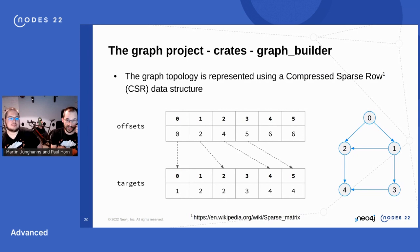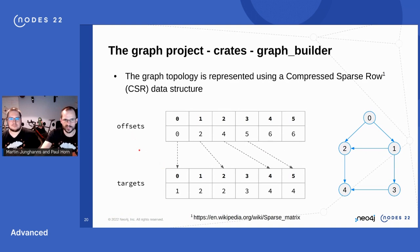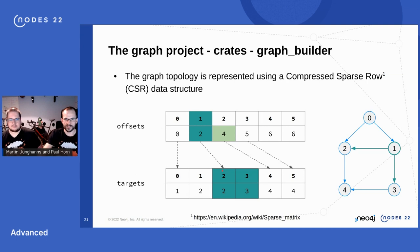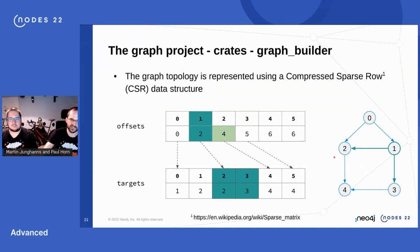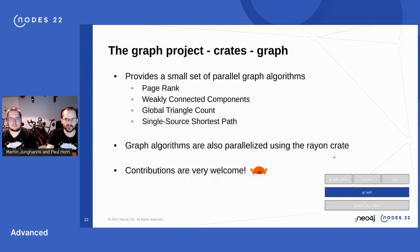The internal data structure is CSR — Compressed Sparse Row — a common representation for sparse graphs. It consists of two arrays: the offsets array of size node_count + 1, and the targets array of size equal to the number of edges. To find the neighbors of node 1, you look up offsets[1] to get an index into the targets array where node 1's adjacency list starts. You then look at offsets[2] to find how many neighbors to read — the difference gives the degree.